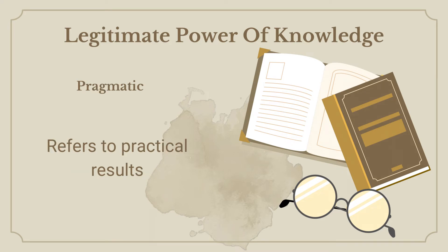The third stage is the pragmatic. When we say pragmatic, we refer to practical results. Our knowledge should be practical to make such knowledge usable. Specific knowledge can be applied or used in real-life situations. If not, then such does not possess the legitimate power for it lacks usability and practicality. Its legitimacy equates with utility, visibility, or practical implications. That is the legitimate power of knowledge.